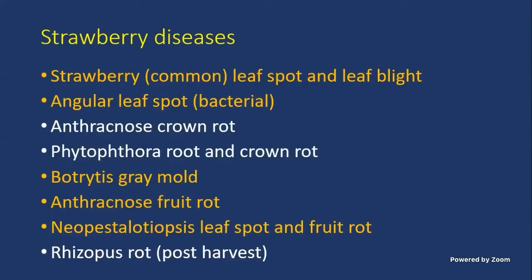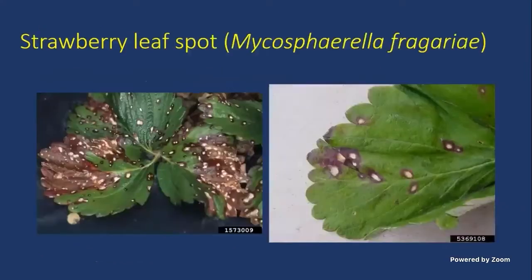We're going to talk about strawberry diseases. I've broken these down into a few leaf spots — both fungal and bacterial — two crown rots, root rots, anthracnose, and Phytophthora. Then we'll talk more heavily on the fruit rots, which are probably the most obvious ones, especially this time of year during harvest season: botrytis, anthracnose fruit rot, neopestalotiopsis — a new disease that Dr. Conner in our diagnostic lab detected not long ago. And also Rhizopus, which oftentimes shows up post-harvest, many times in your kitchen or refrigerator.